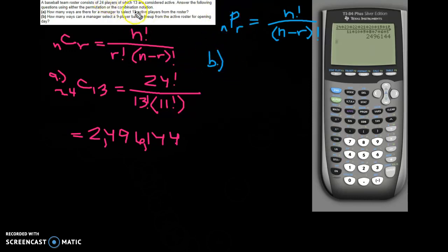So for part B, we're doing... how many ways can the manager select from the active roster? So be careful about reading this. You're picking your 9-player batting lineup from the active roster, which isn't all 24 people, just the 13 who are actually playing. And so this looks like you have 13 people to pick from, and you're choosing 9. So we have 13 factorial over 13 minus 9 factorial, so 4 factorial.